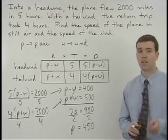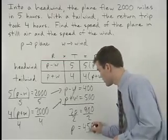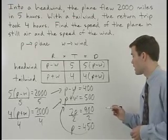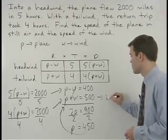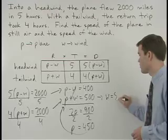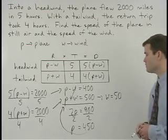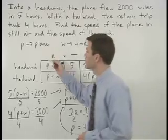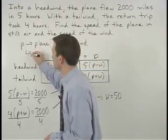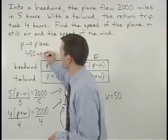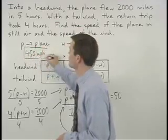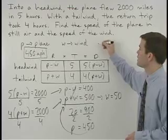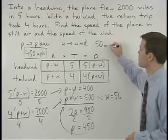To find w, plug 450 back in for p in either equation and you'll find that w equals 50. So the speed of the plane is 450 miles per hour and the speed of the wind is 50 miles per hour.